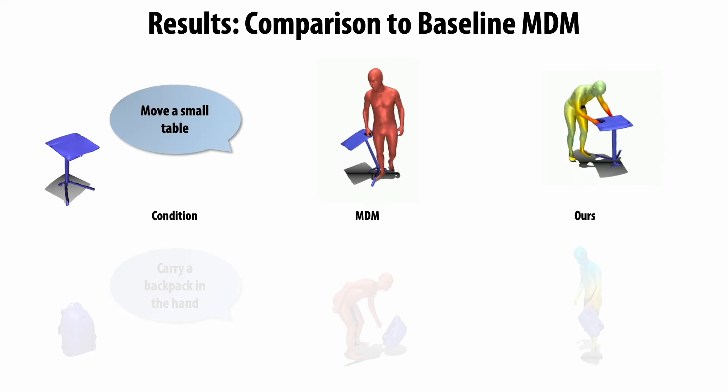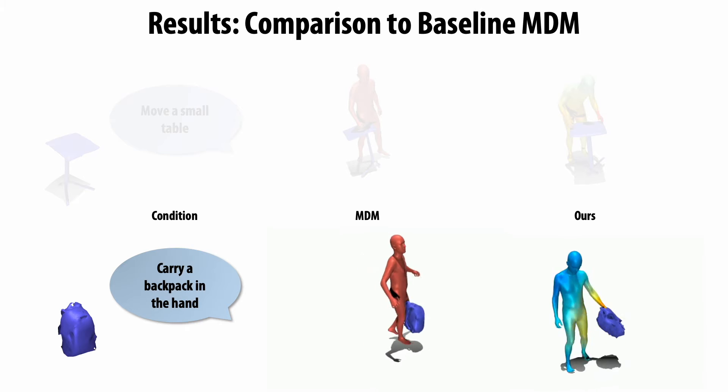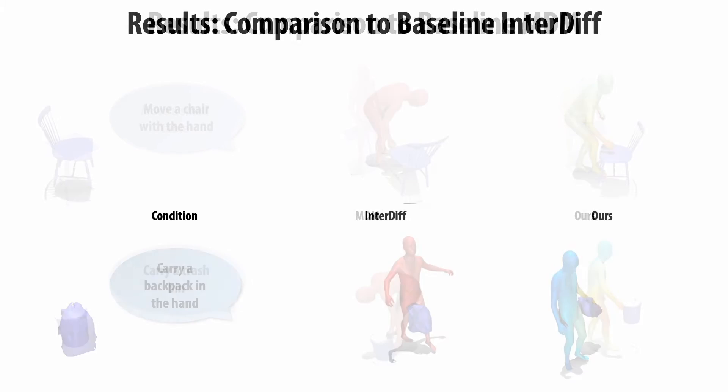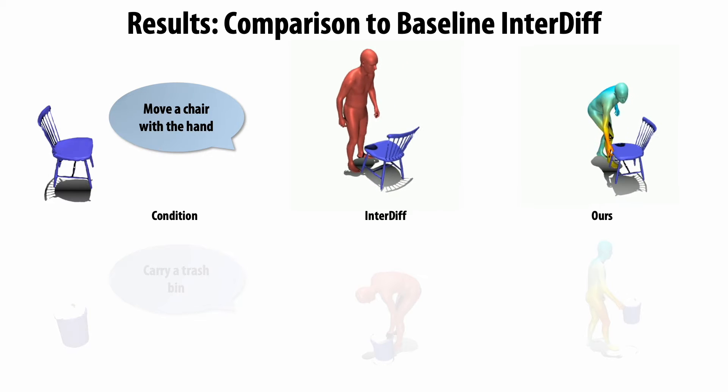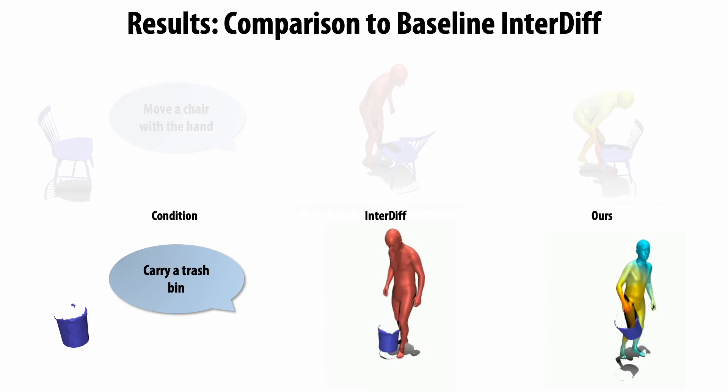Compared to baselines, our interactions are more natural, generating less floating and self-moving objects, and enabling more accurate interactions between human and object that better follow the action description.